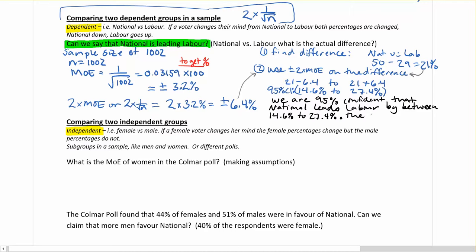This confidence interval does not include 0. This idea is that if we had 0 in there, if we had a negative number, it might show us that actually labour could be winning and that national could be behind. For comparing dependent groups again, the key things to remember is that we have to decide if they're dependent, and then do 2 times the margin of error.